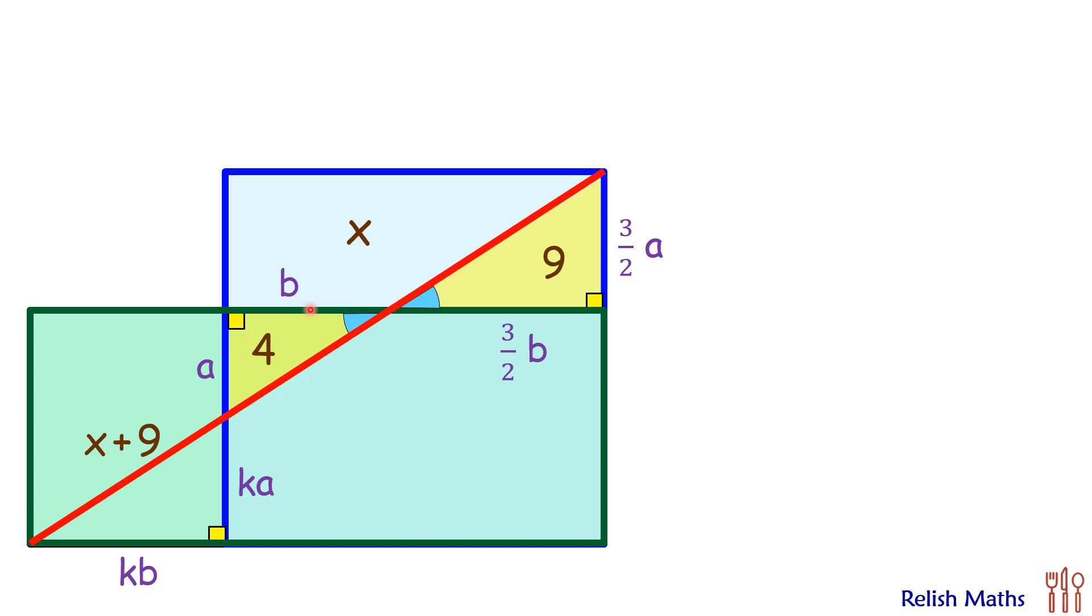Now if we check the area of this rectangle using length times breadth, we will get our equation as length is b plus 3/2 b times 3/2 a equals x plus 9. Simplifying it, we will get 15 times ab equals 4 times x plus 9.